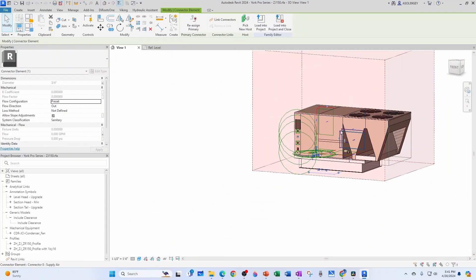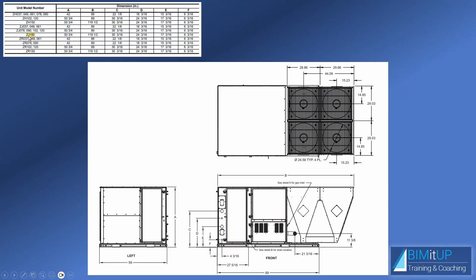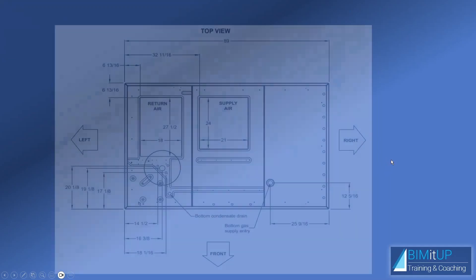We're going to keep it very simple. I found a PDF on York's website — it's a lot cleaner. We'll use our unit, the ZJ 150, and get the dimensions from there. We're going to define a left, right, front, and back reference plane for the overall box. That box will have a length B = 119.5 inches, a width of 59 inches, and a height A = 50.75 inches.